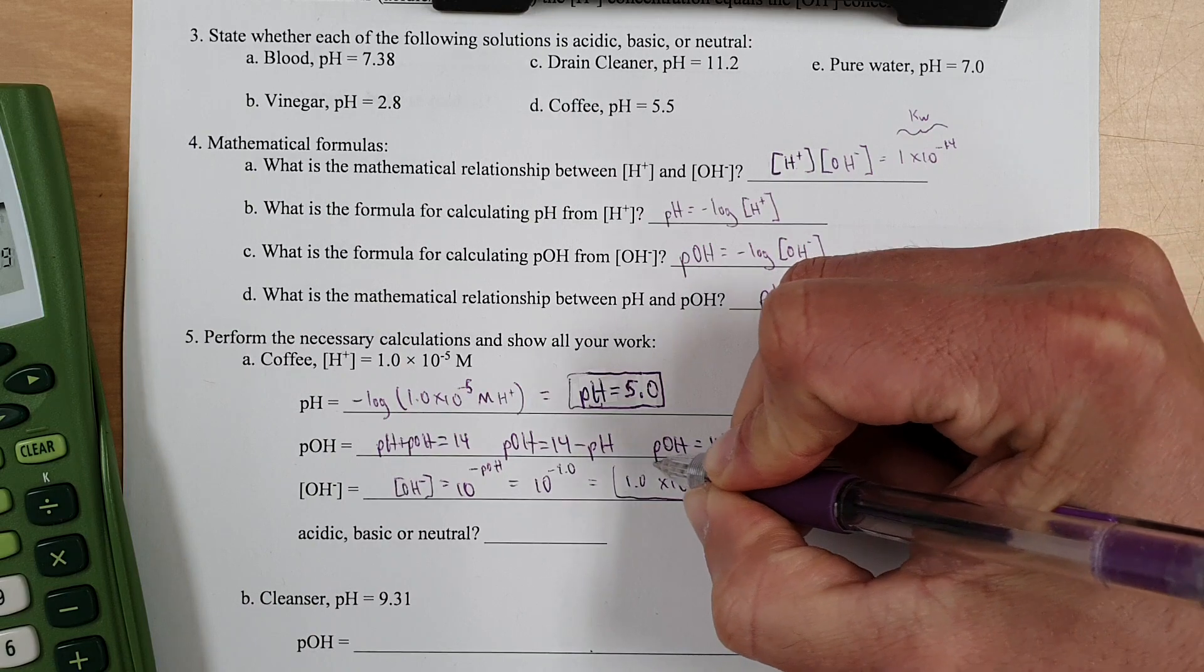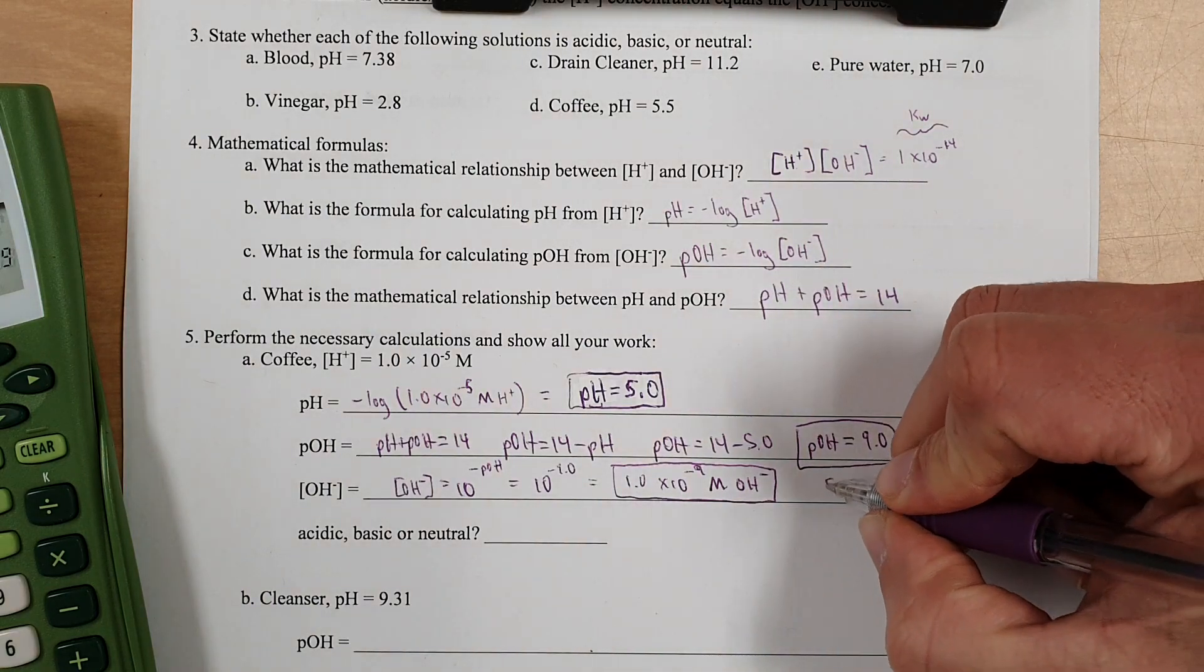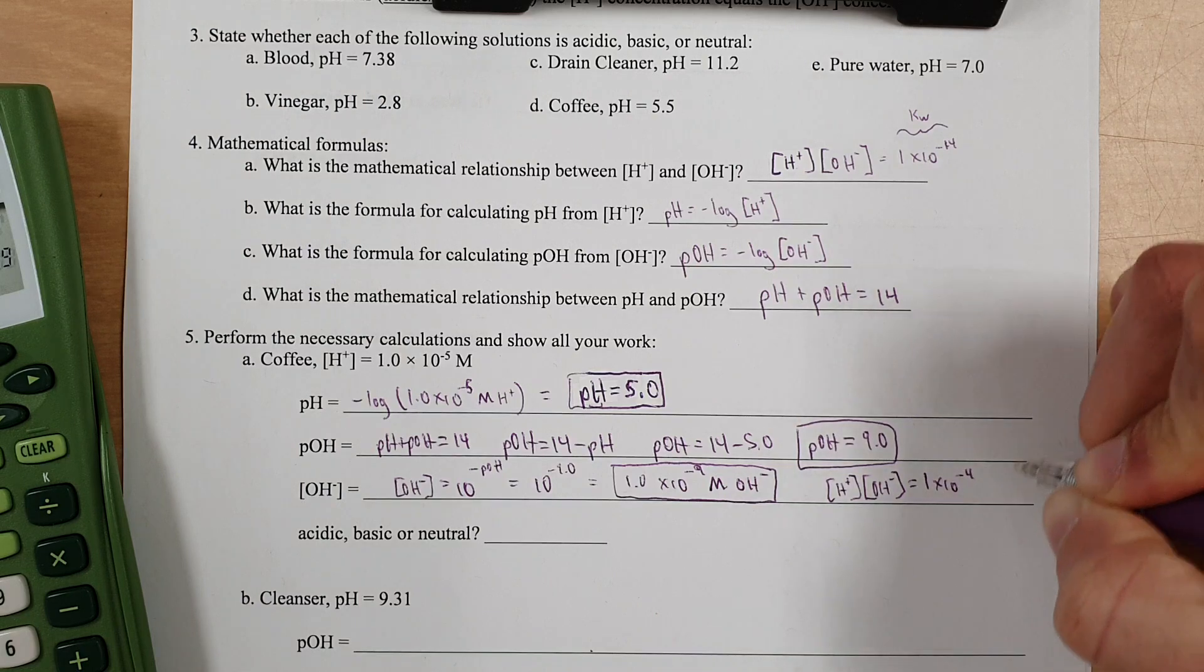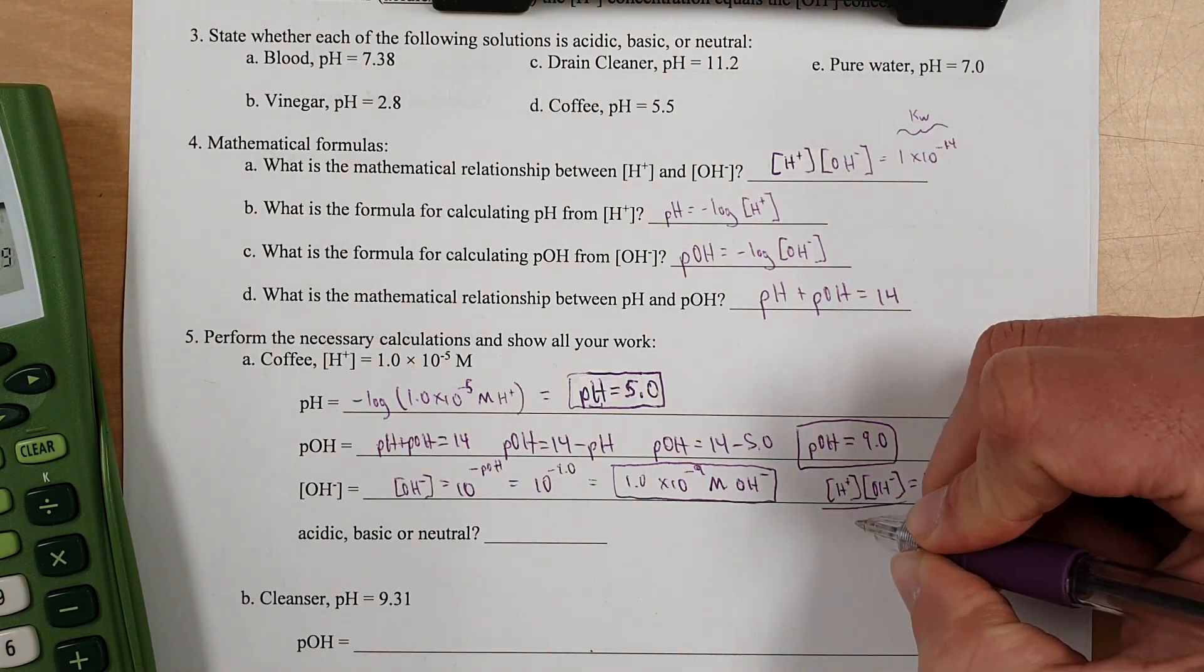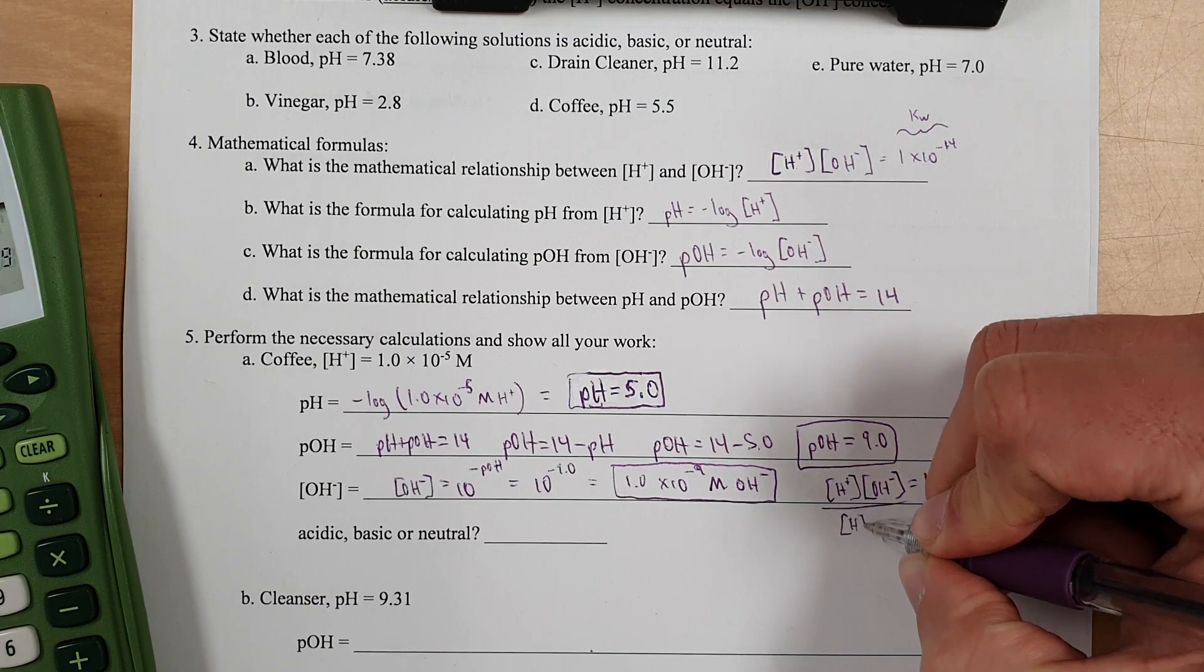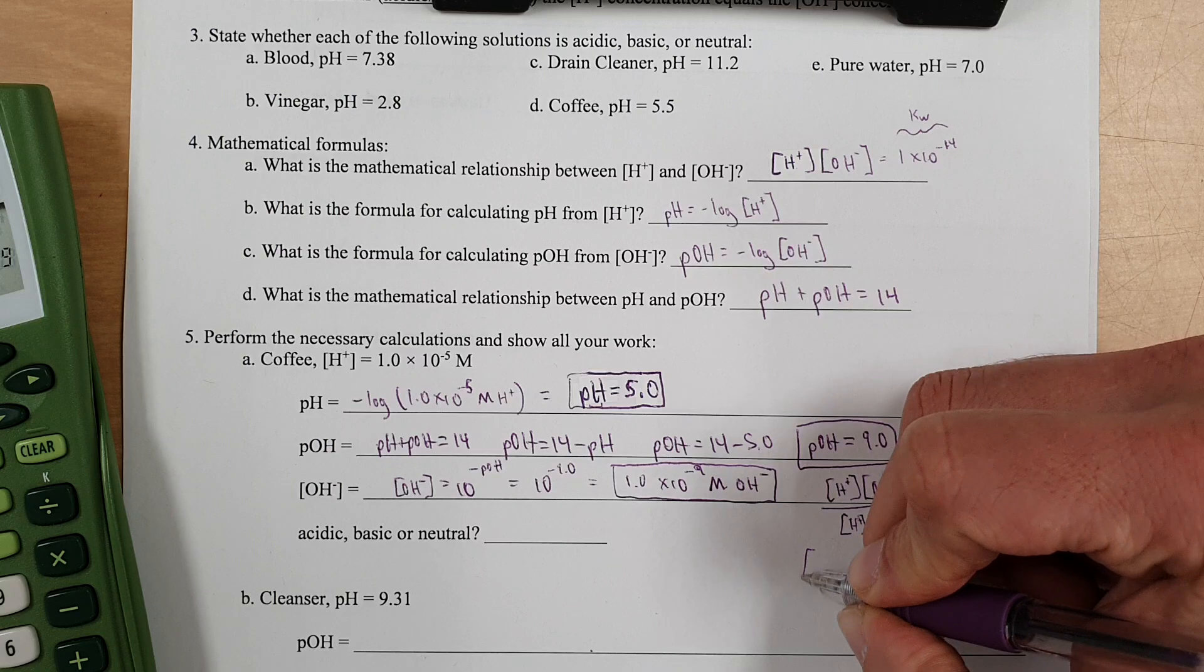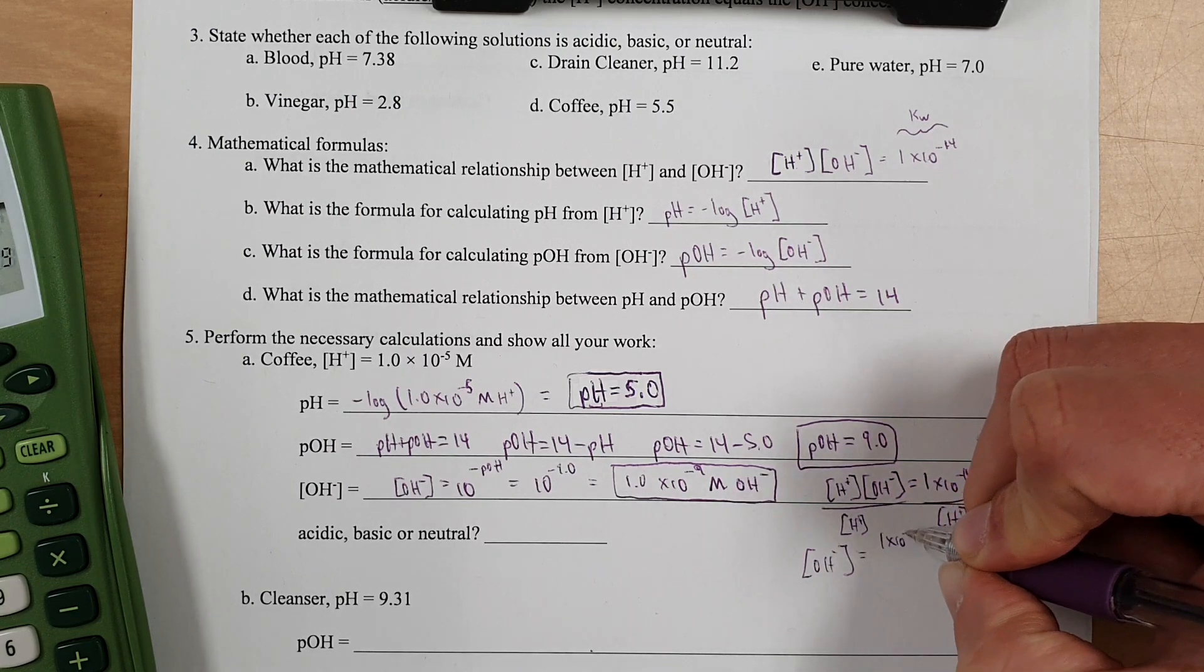Now, the other way I could have done that, and this is equally valid, I could have said that since hydrogen ion times hydroxide ion concentration equals 1 times 10 to the negative 14th.